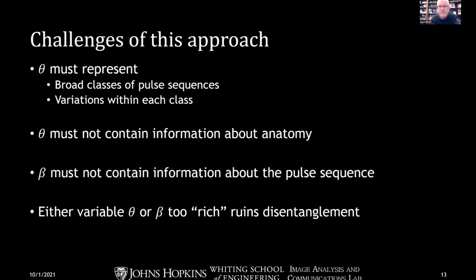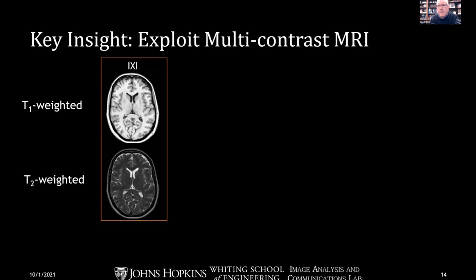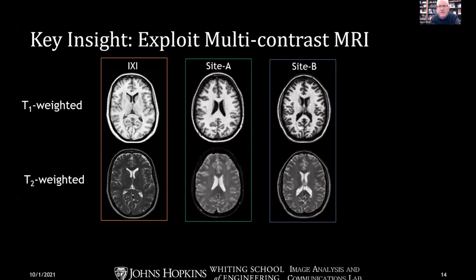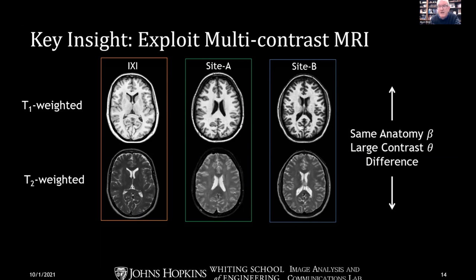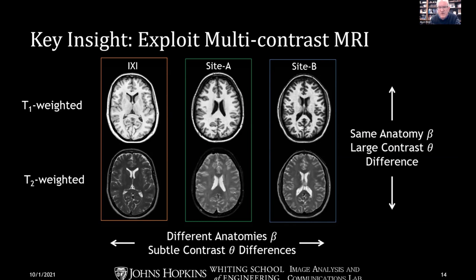A key insight we were able to exploit: although we don't have traveling subjects between sites, we do have multiple acquisitions at each site — typically a T1-weighted and often a T2-weighted image. So we have multi-contrast at each site. With three sites, for example, we have multiple contrasts, meaning there's some supervision between pairs of images within a site, but across sites we don't. We recognize that within a site, the same anatomy (beta) exists but with large contrast differences, while across sites we have different anatomies but only subtle contrast differences.